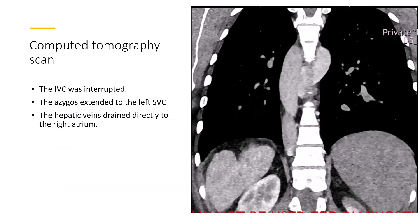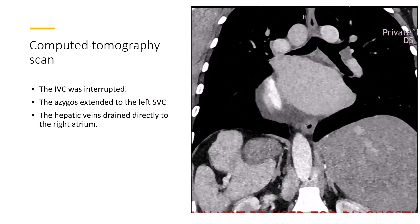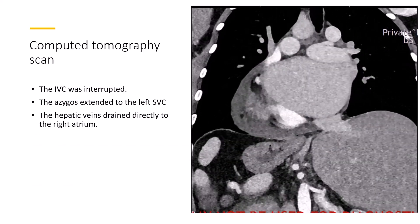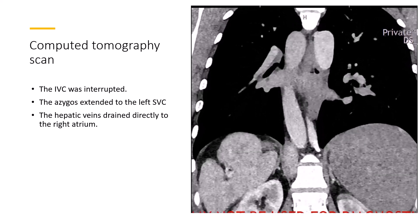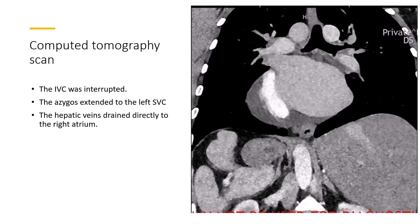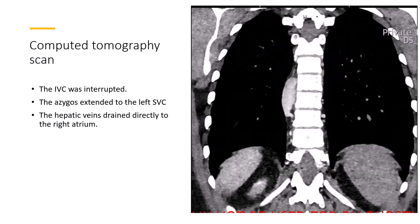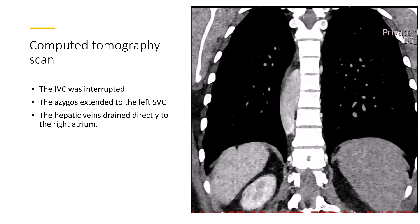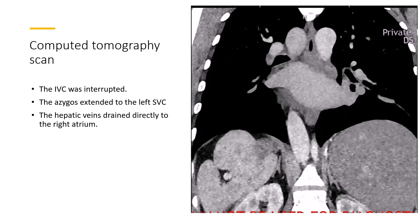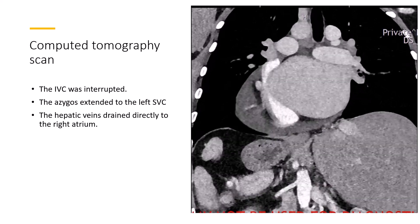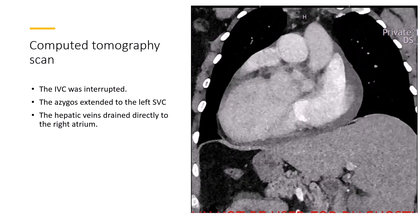The CT scan showed the inferior vena cava was interrupted, the azygos extended to the left SVC, and the hepatic vein drained directly to the right atrium. You can see the dextrocardia, the hepatic veins, the azygos draining into the left SVC, and the hepatic veins draining directly to the right atrium — that's the left atrium.